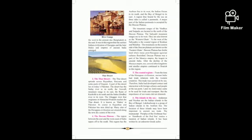The Thar Desert spreads across Rajasthan, Haryana, and some parts of Gujarat, with a part lying in present-day Pakistan. The desert has the Satlaj River to its north, the Aravalli mountain range to its east, the Rann of Kutch to its south, and the Indus River to its west. The Ghaggar River, which originates in Himachal Pradesh and is also known as Hakra in Pakistan, reaches the Thar Desert. Many sites of Harappan civilization are situated along the now-dry pools of this river.